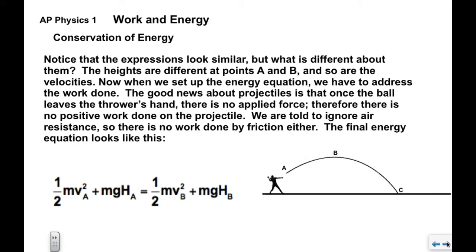When we set up the energy equation, we have energy at A equals energy at B. The good news about projectiles is that once the ball leaves the thrower's hand, there's no applied force that's adding energy to the system. So there's no positive work done on the projectile. We're told that we can ignore air resistance so there's no friction. So then this is my final energy equation.